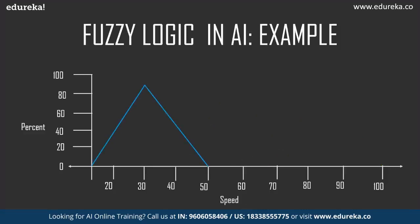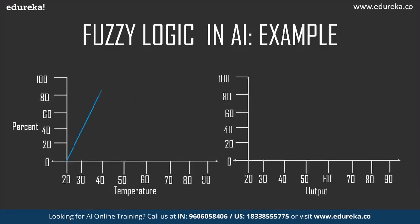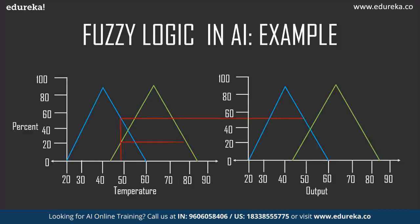In step two, we use three fuzzy sets for the output: slow, medium, and fast fan speed. A set of membership functions is created for each output set, similar to what was done for the input. In the final step, we create three rules: if temperature is hot then speed is fast; if warm then medium; if cold then slow. These rules are compared in a graph mapping input temperature to output speed.